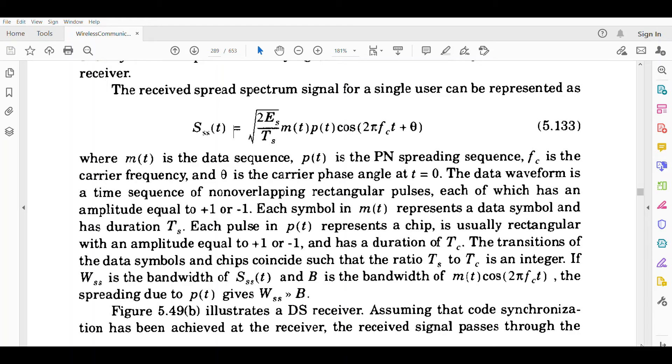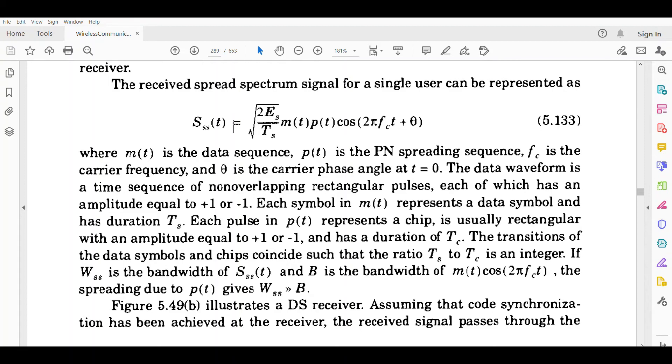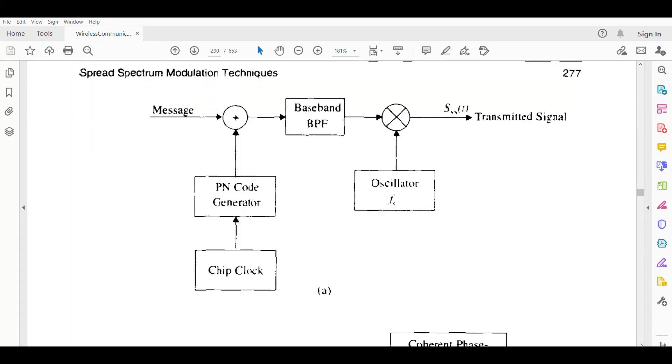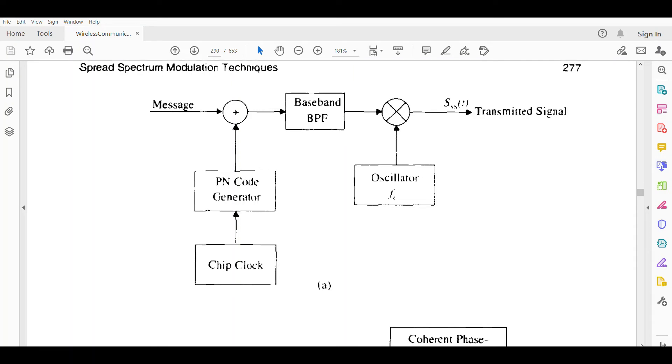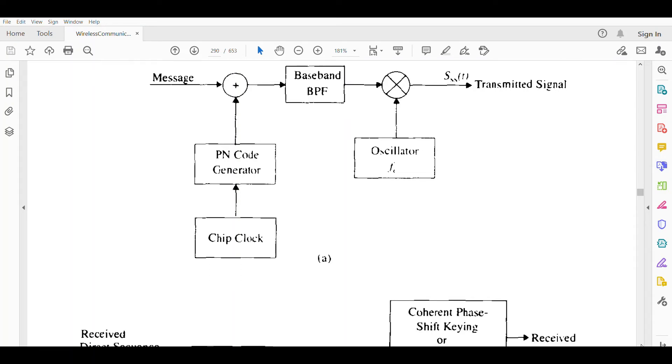Each symbol in m(t) represents a data symbol and has duration T_s. Each pulse in p(t) represents a chip - it is usually rectangular with an amplitude equal to plus one or minus one and has a duration of T_c. The transmission of data symbols and chips coincide such that the ratio T_s to T_c is an integer. If W_ss is the bandwidth of the spread spectrum signal and B is the bandwidth of m(t)cos(2πf_c t), the spreading due to p(t) gives W_ss greater than B.